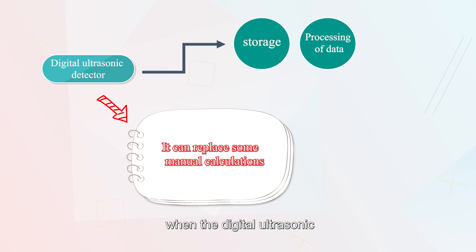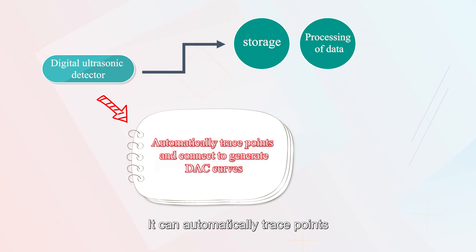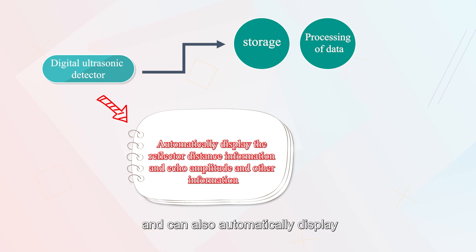For example, when the digital ultrasonic detector is used for testing, it can automatically record the probe parameters such as the k-value of the angle probe. It can automatically trace points and connect them to generate DAC curves and can also automatically display the distance information, echo amplitude, and other information of the reflector.